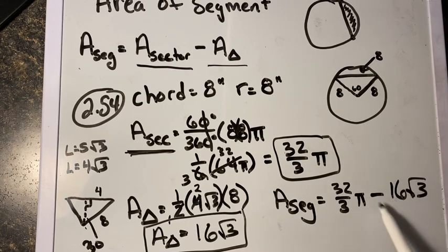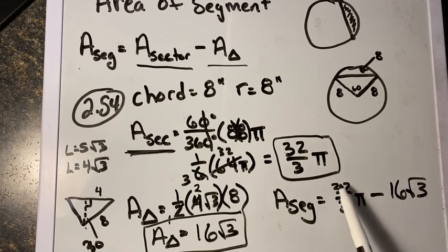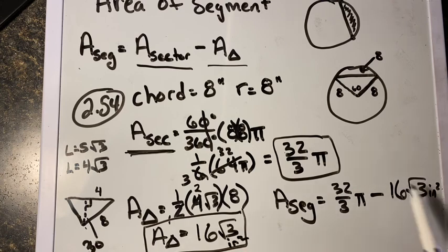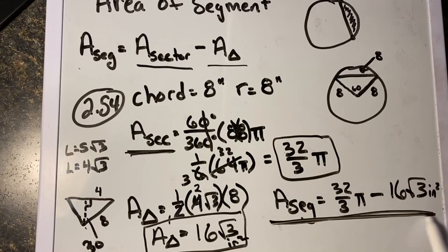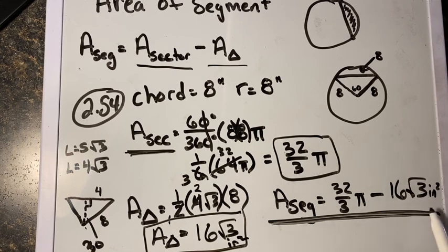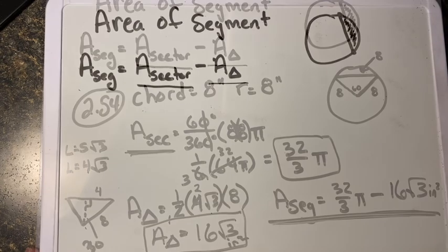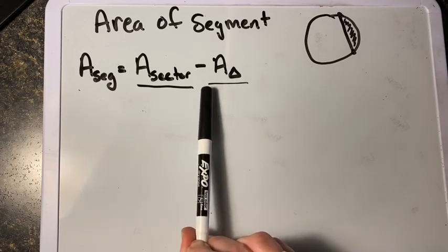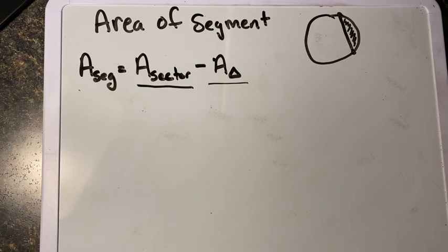Now we put it together: area of segment equals area of sector minus area of triangle, which is 32/3 π minus 16√3 square inches. We cannot simplify further because these are not like terms — one involves π and the other involves √3. So this expression is our final answer. Remember: area of segment equals area of sector minus area of triangle.